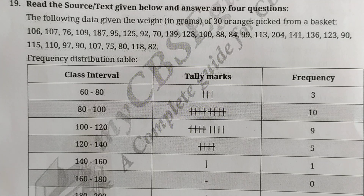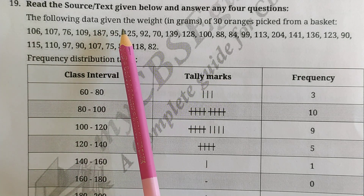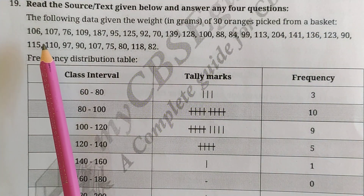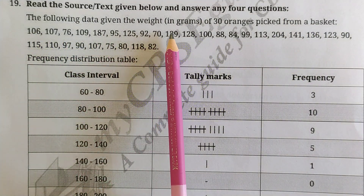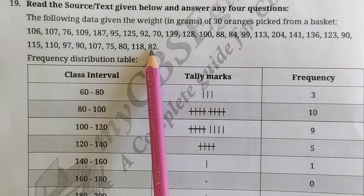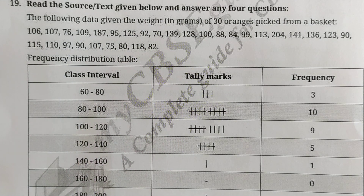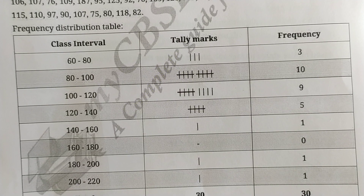Hello dear students, welcome to this YouTube channel. This is a case study based question taken from Class 9 Chapter Statistics. The question gives the weight in grams of 30 oranges picked from a basket — weights like 106g, 107g, and so on up to 118g, 82g. A frequency distribution table has been made from this data.